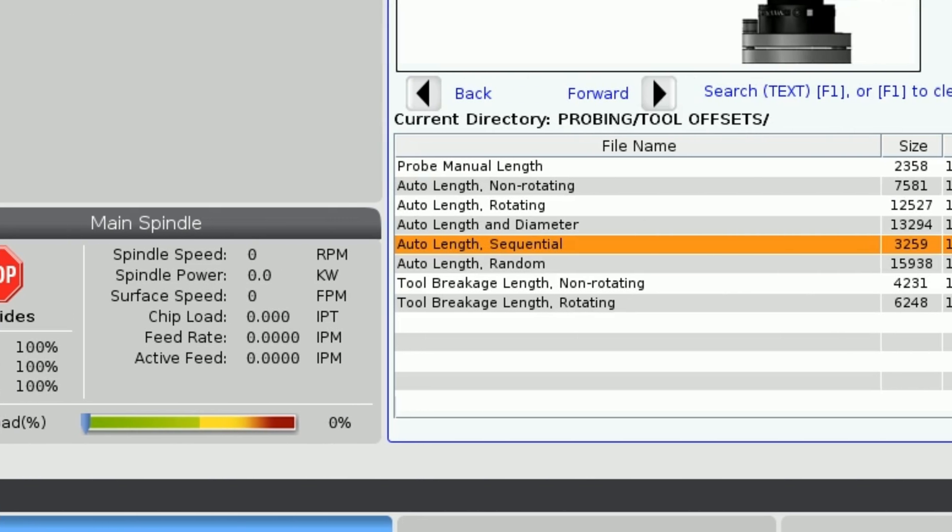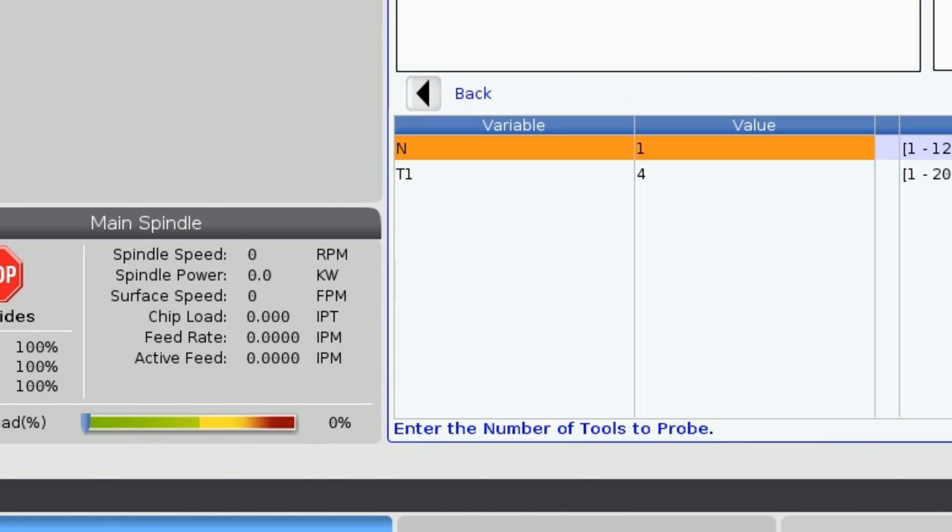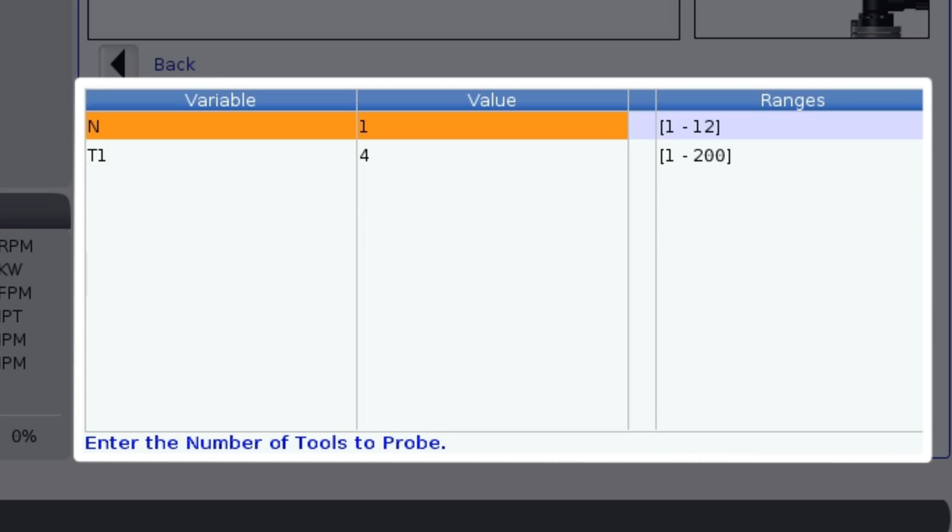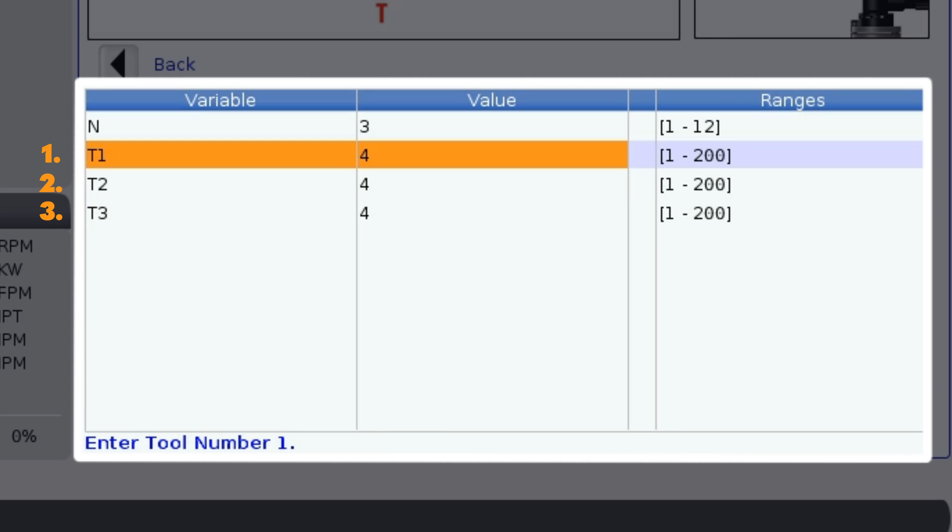I've selected auto length random. Then I'll specify the number of tools I want to check. In this case, I'll enter three. Now we see that we have three new spots. For each one of these, I'll select one of the tools I want to check. Tool numbers two, three, and five of course.